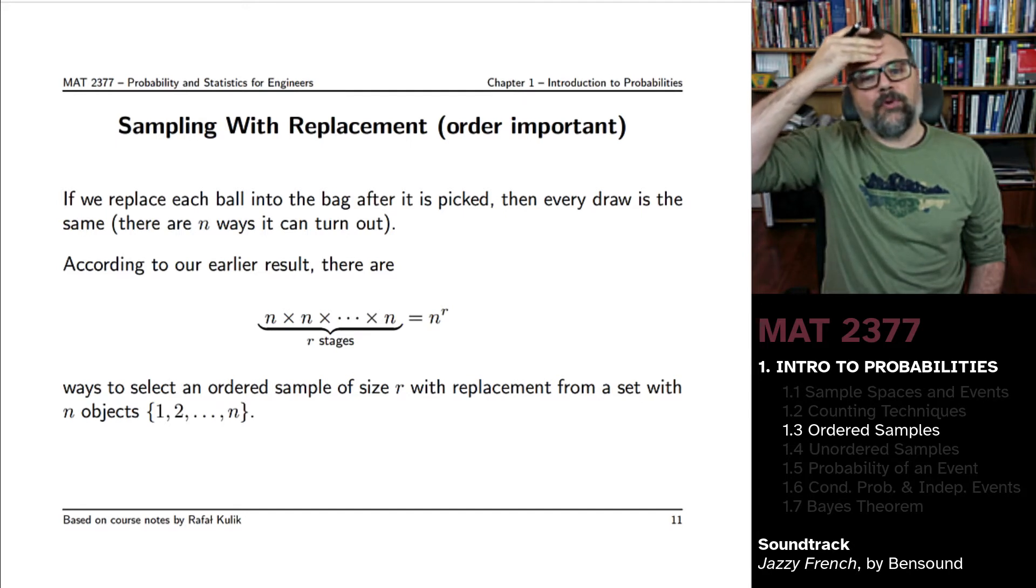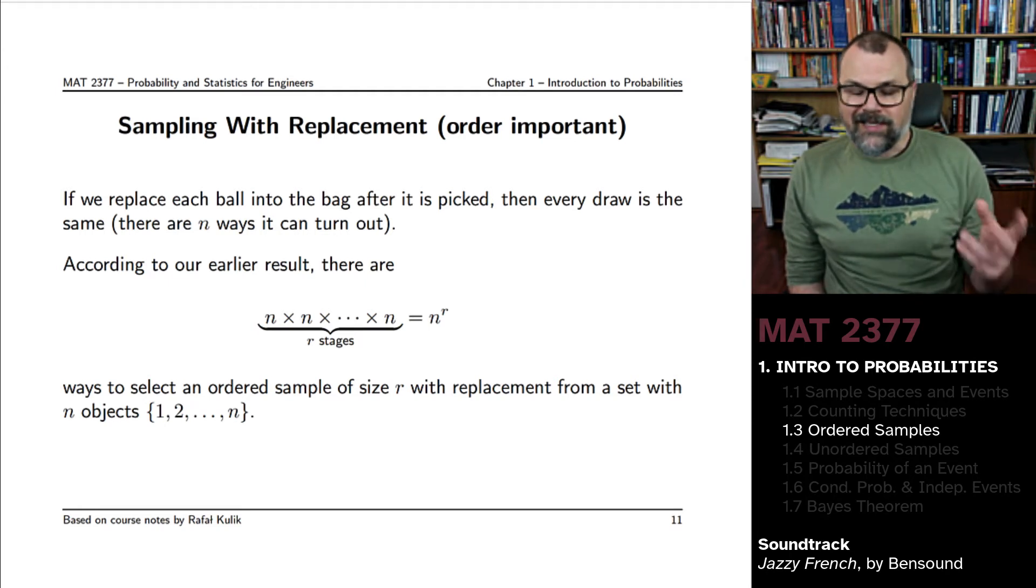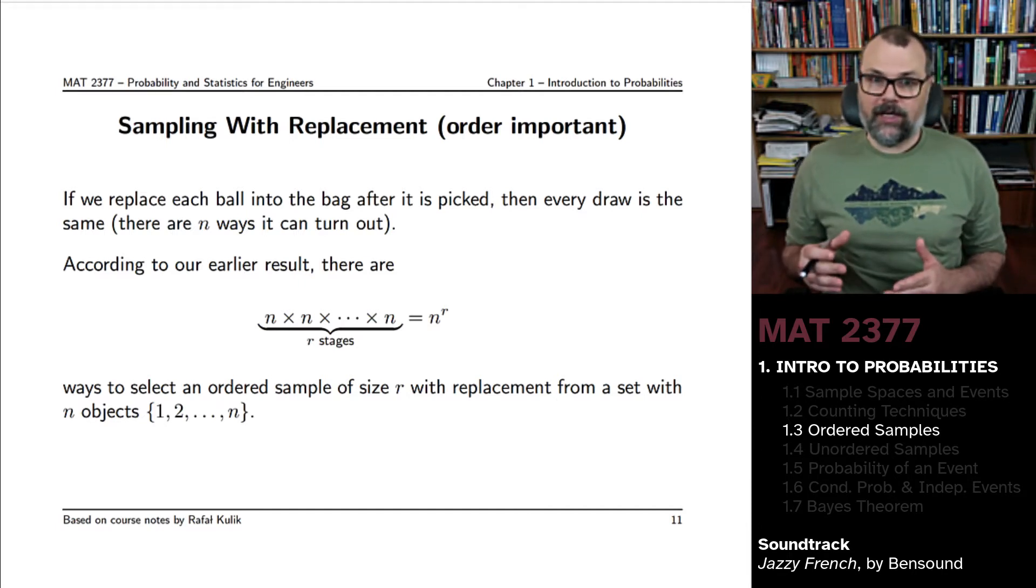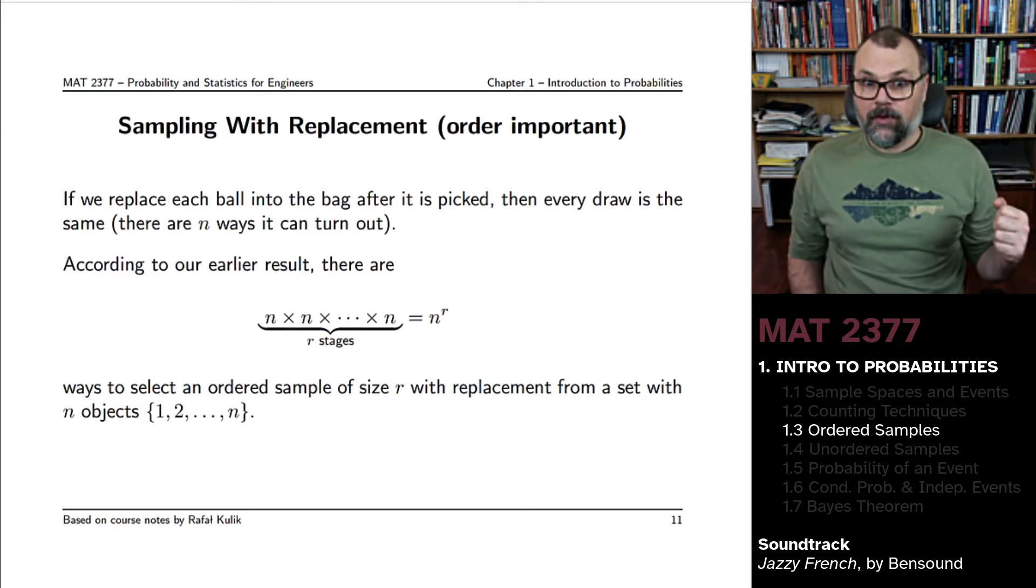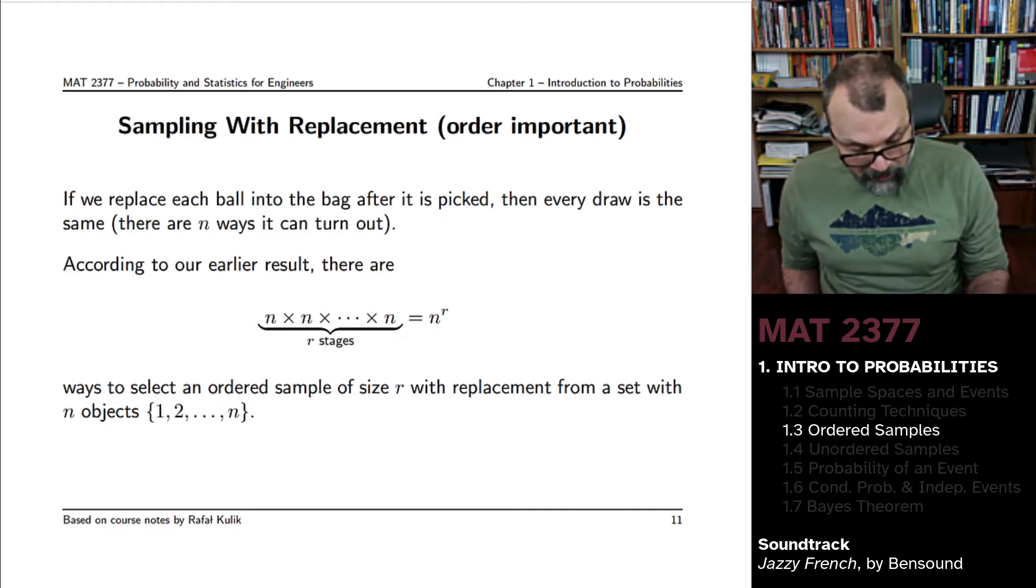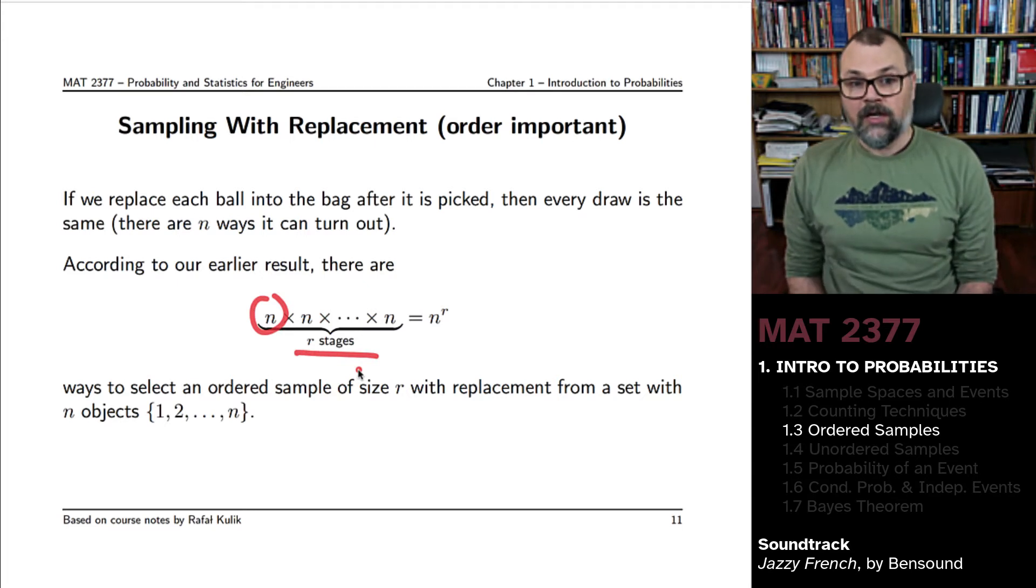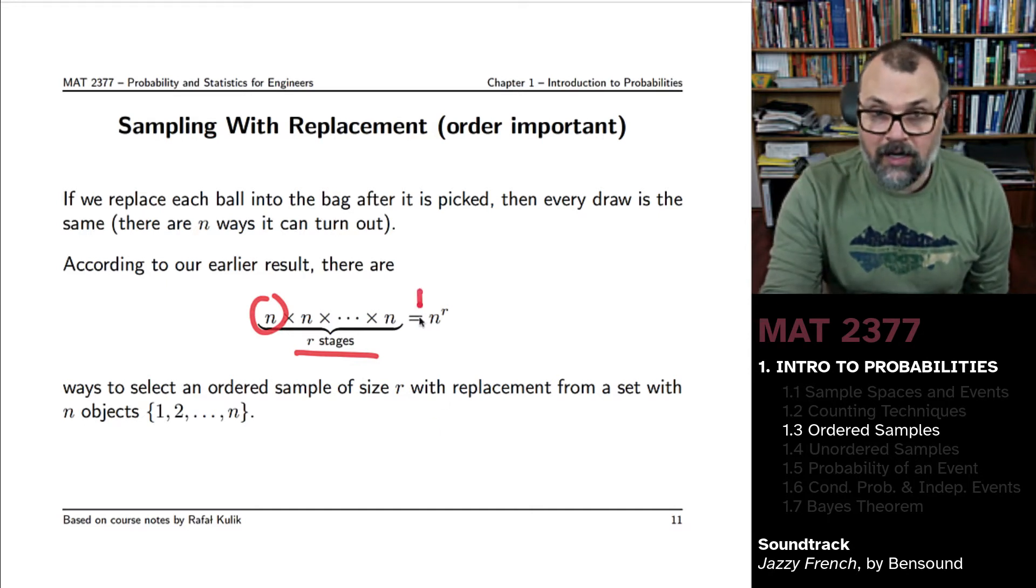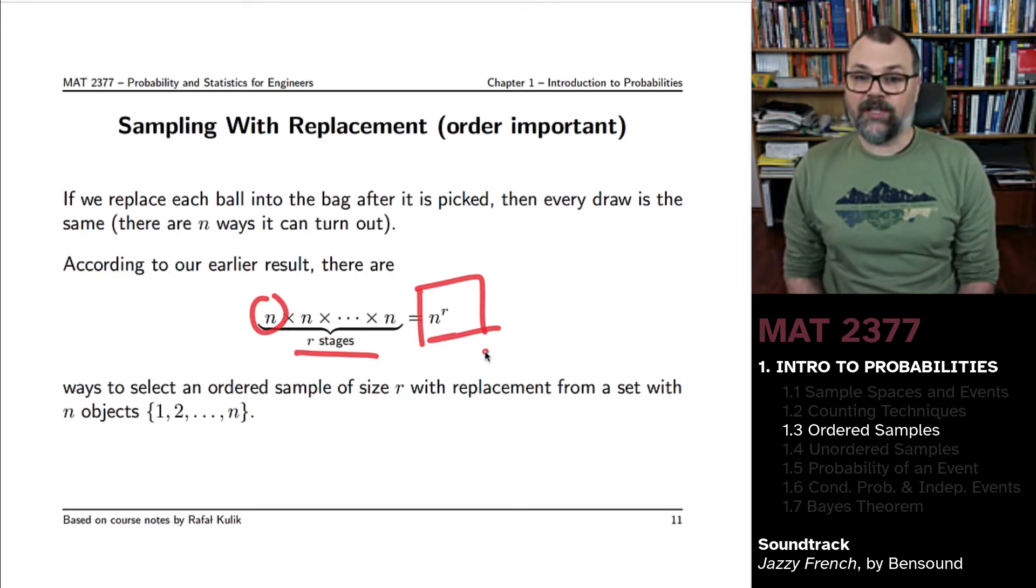If the order is important and you sample with replacement, it's fairly straightforward. If you replace each ball into the bag after you've picked it, then every draw is the same. The procedure for each of the stages is the same. There's N balls in your bag. There's N ways every draw can turn out. So according to the counting technique that we've seen, there's N potential outcomes for every stage. There's R stages in total, the number of draws, and so you would get the product of N with itself R times. That's the same thing as N to the R. So there's N to the R ways to select an ordered sample of size R with replacement from a set with N objects.